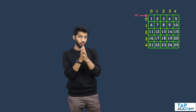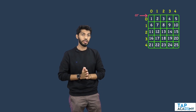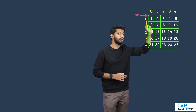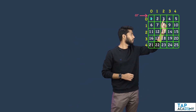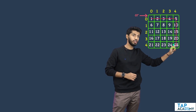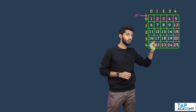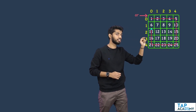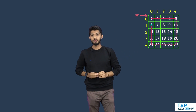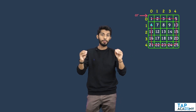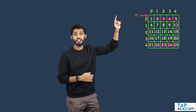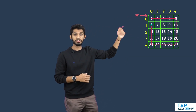What exactly you have to print is: if this is the given matrix, you need to print 1, 2, 3, 4, 5, then 10, 15, 20, 25, 24, 23, 22, 21, 16, 11. So you are printing all the border elements in the clockwise direction.